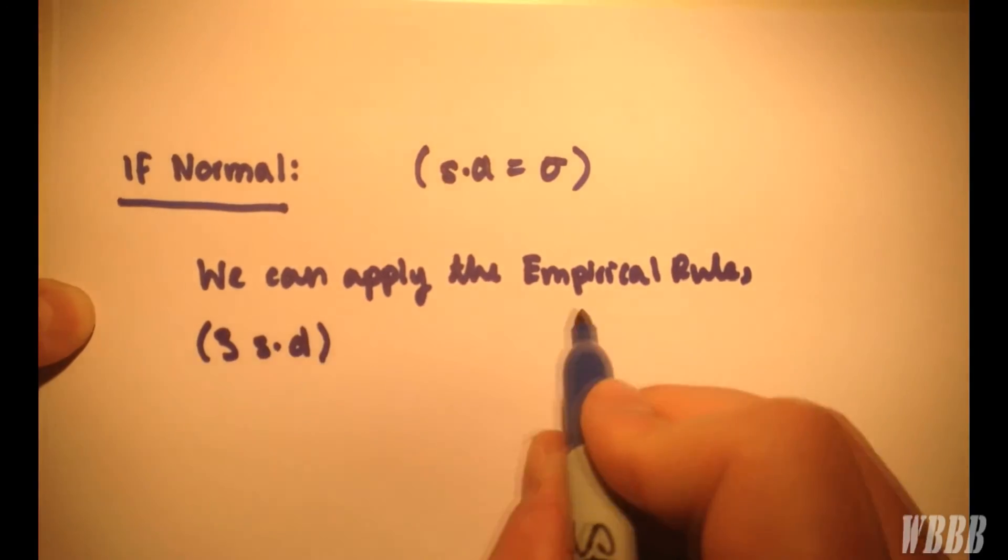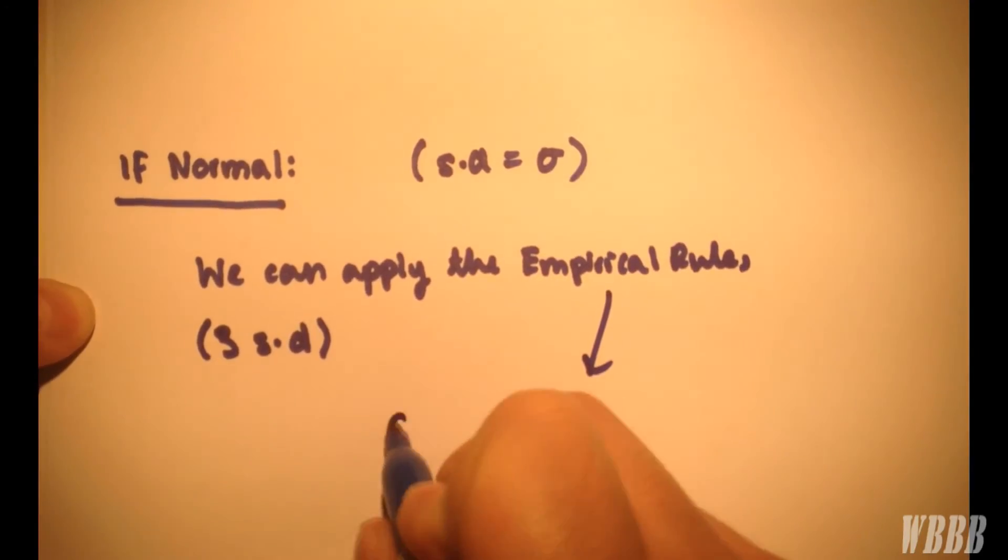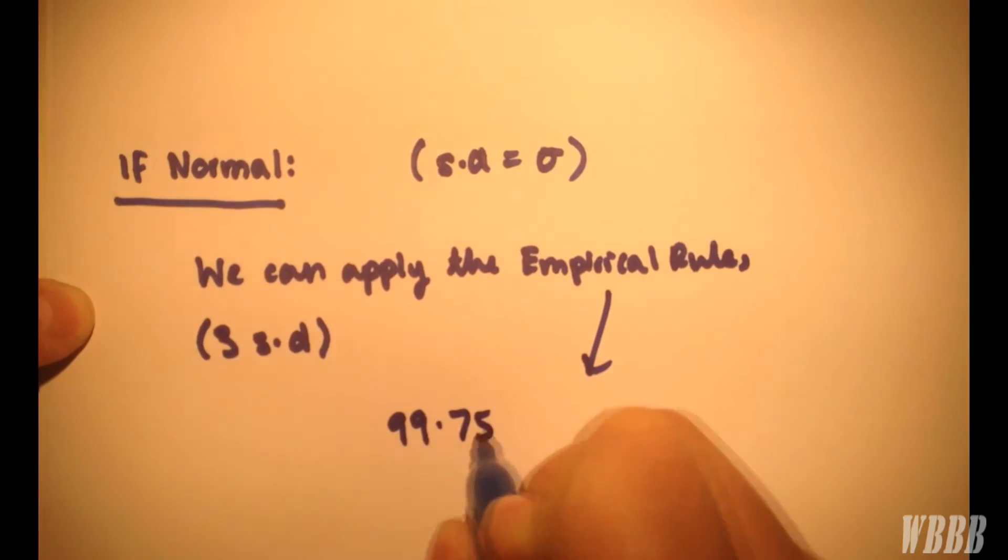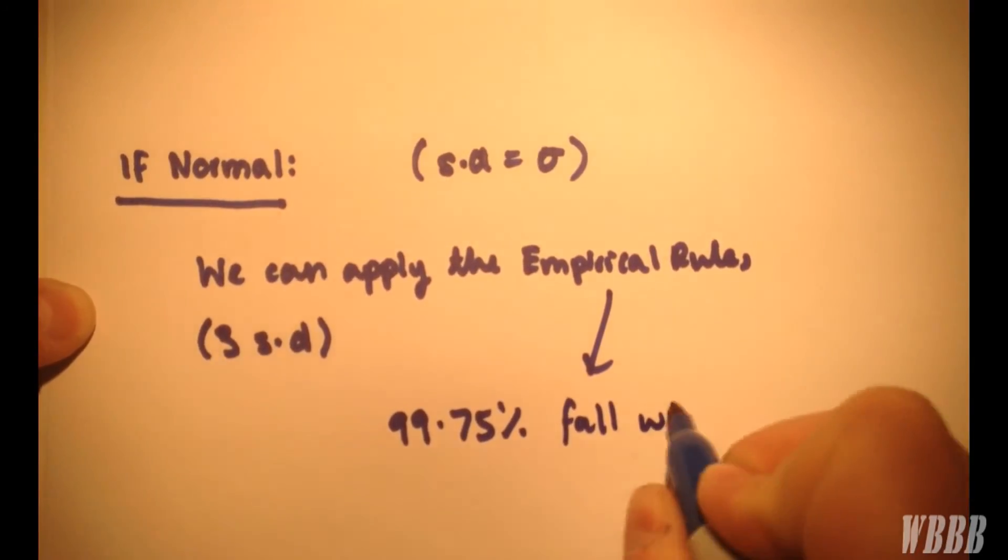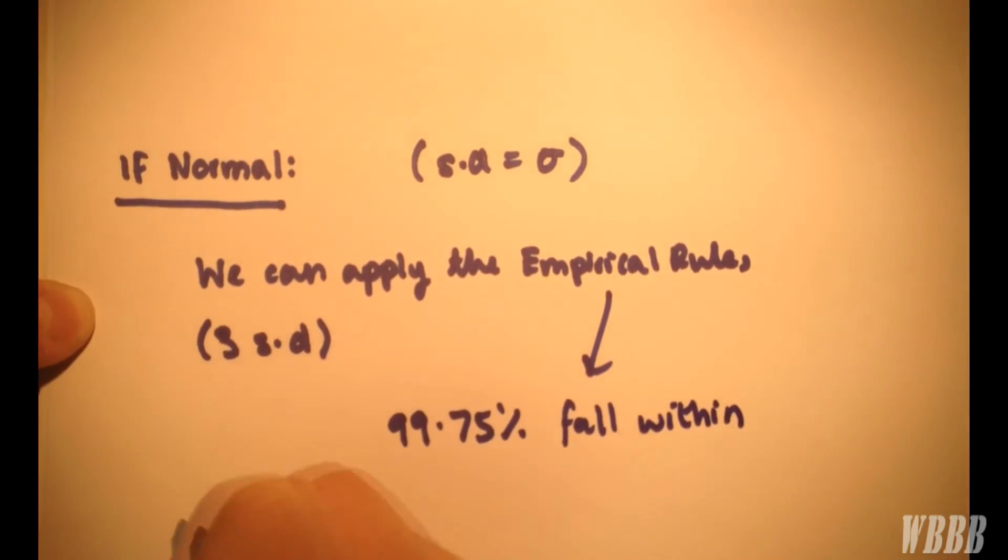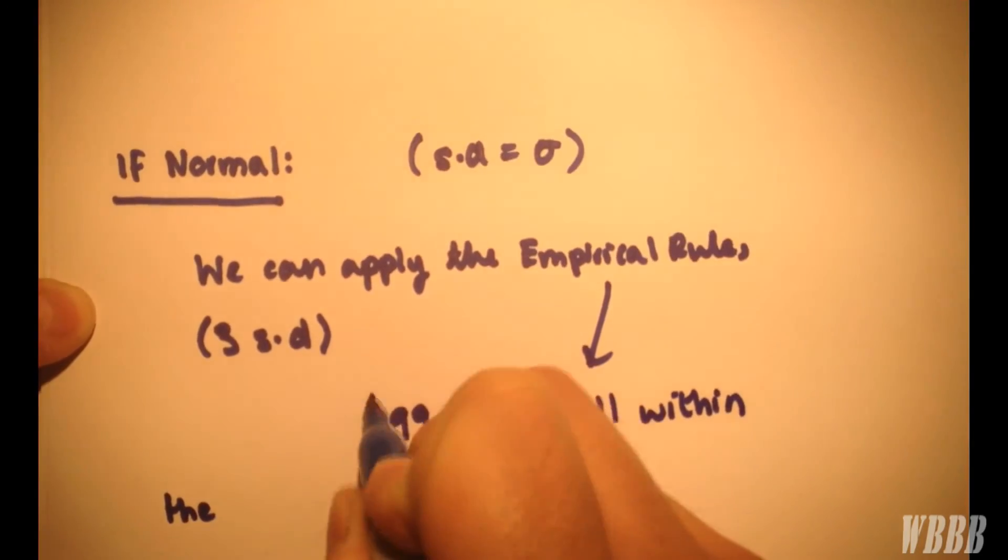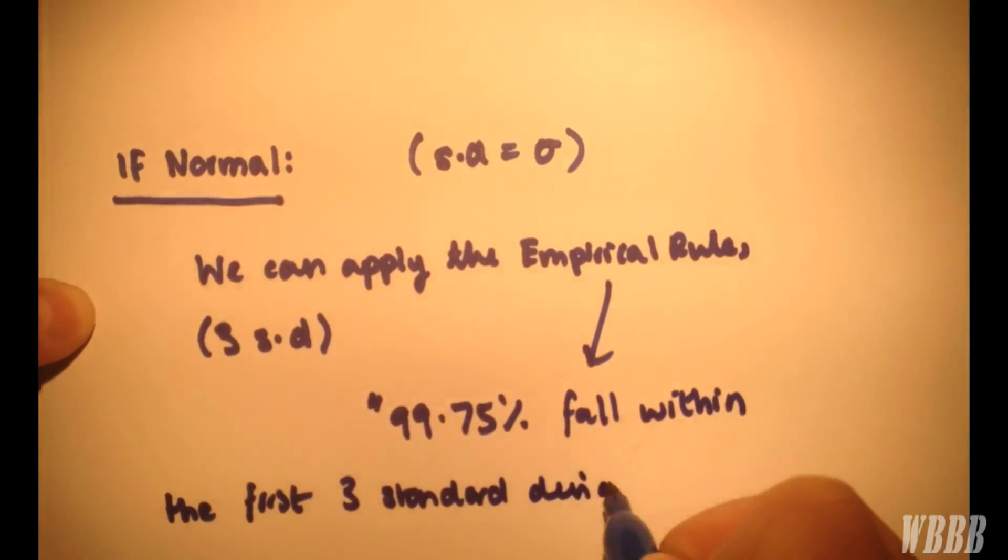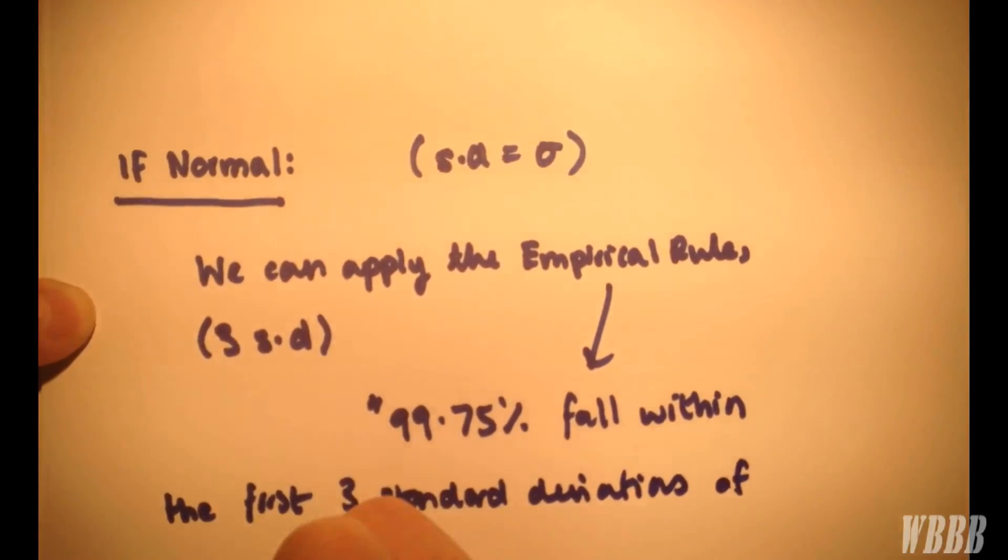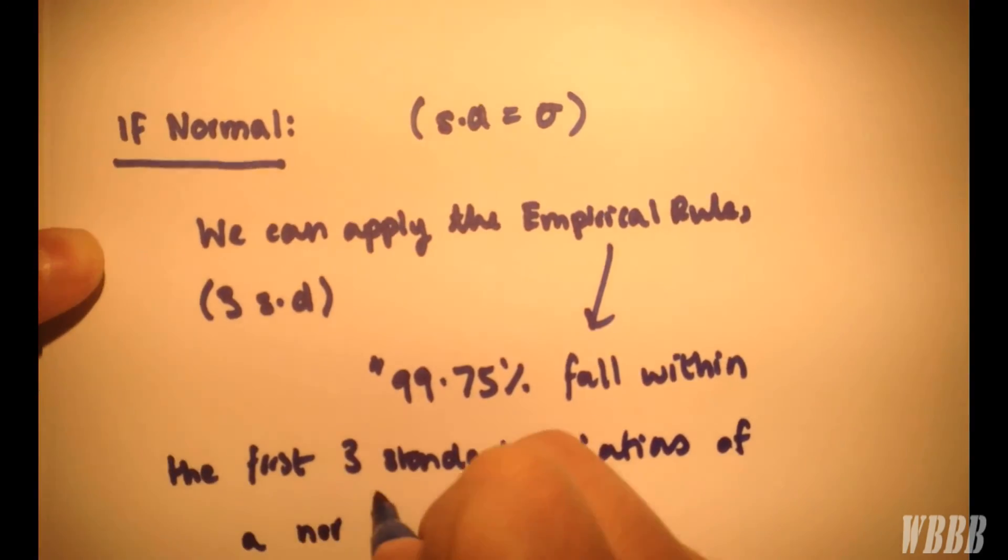And the empirical rule says that 99.75% fall within the first 3 standard deviations of a normal distribution.